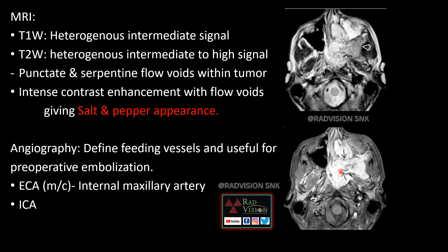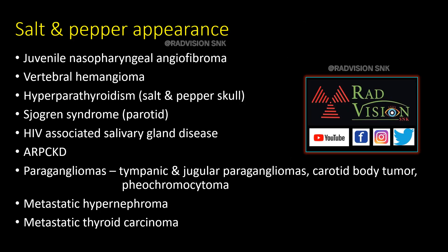Angiography is useful for defining the feeding vessels, the most common being the internal maxillary artery. Salt-and-pepper appearance is also seen in vertebral hemangioma, hyperparathyroidism, Sjögren's syndrome, HIV-associated salivary gland disease, autosomal recessive polycystic disease, paraganglioma, metastatic hypernephroma, and metastatic thyroid carcinoma.